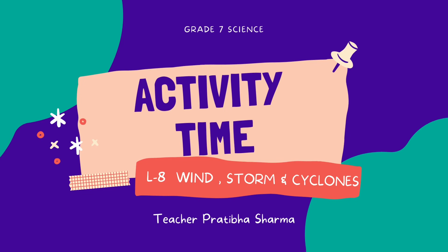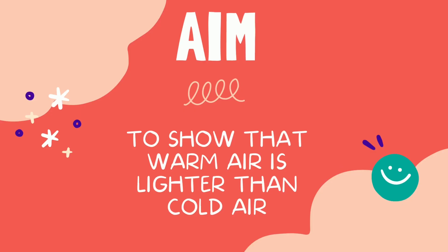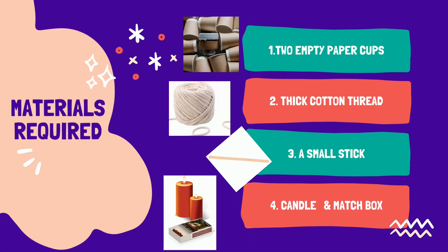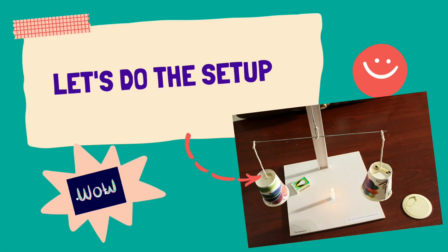Hello kids, it's activity time once again under chapter number eight: Wind Storms and Cyclones. Today through this activity you will see that warm air is lighter than cold air. The materials needed to conduct the activity are two empty paper cups, thick cotton thread, a small stick, a candle, and a matchbox.